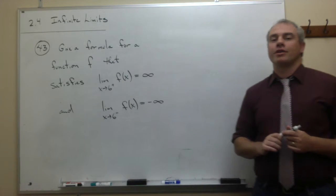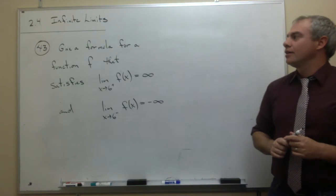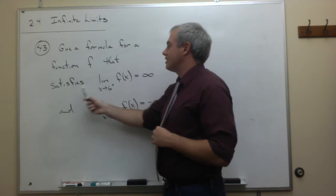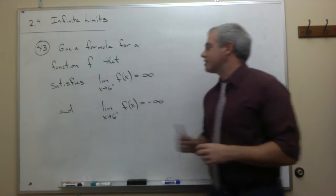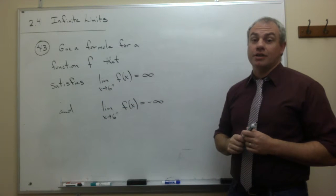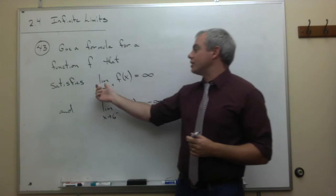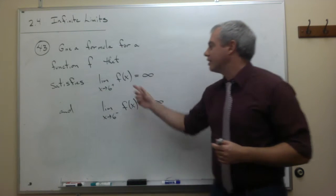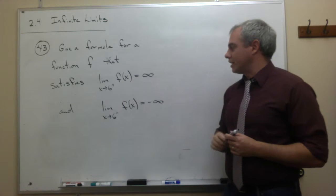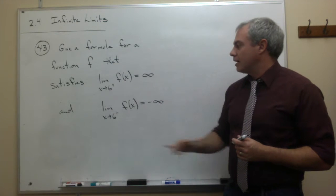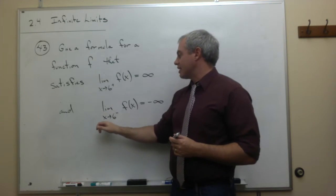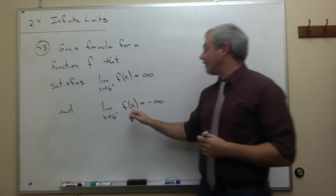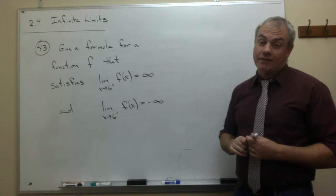In problem number 43, we're asked to give a formula for a function f that satisfies the following two conditions. The first condition is that the limit as x goes to 6 from the right of f of x is infinity, and the second condition is that the limit as x goes to 6 from the left of f of x is negative infinity.